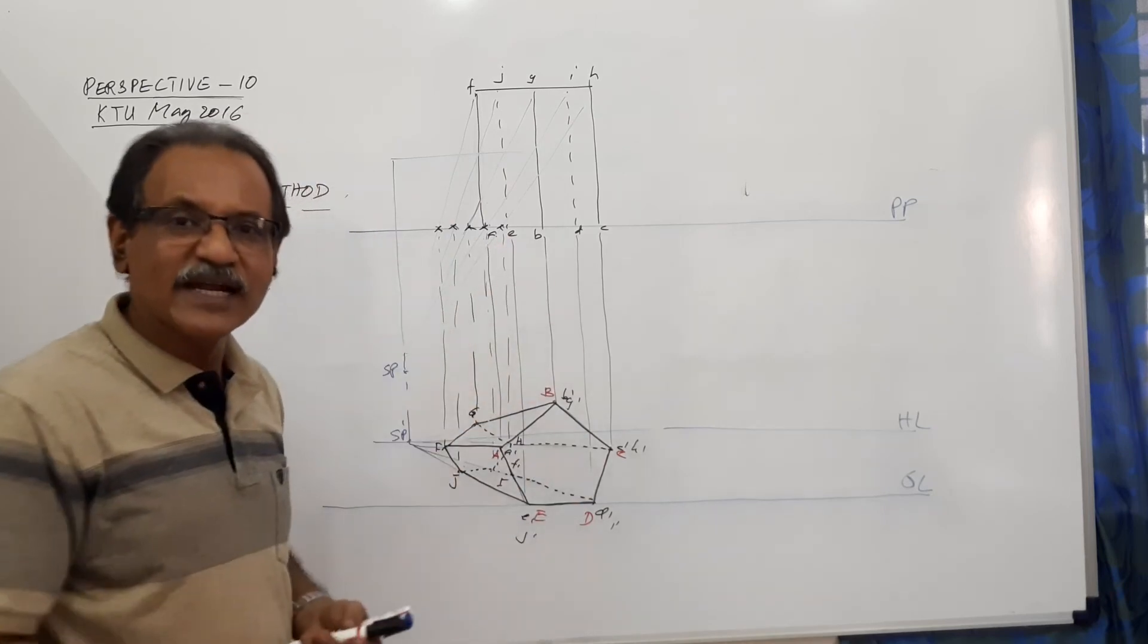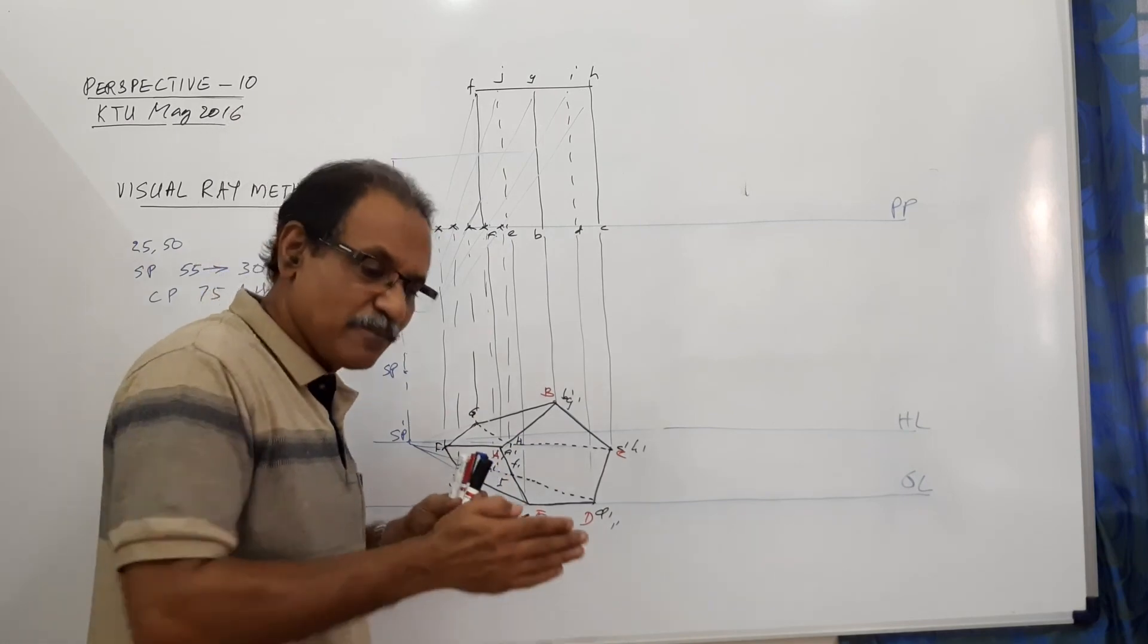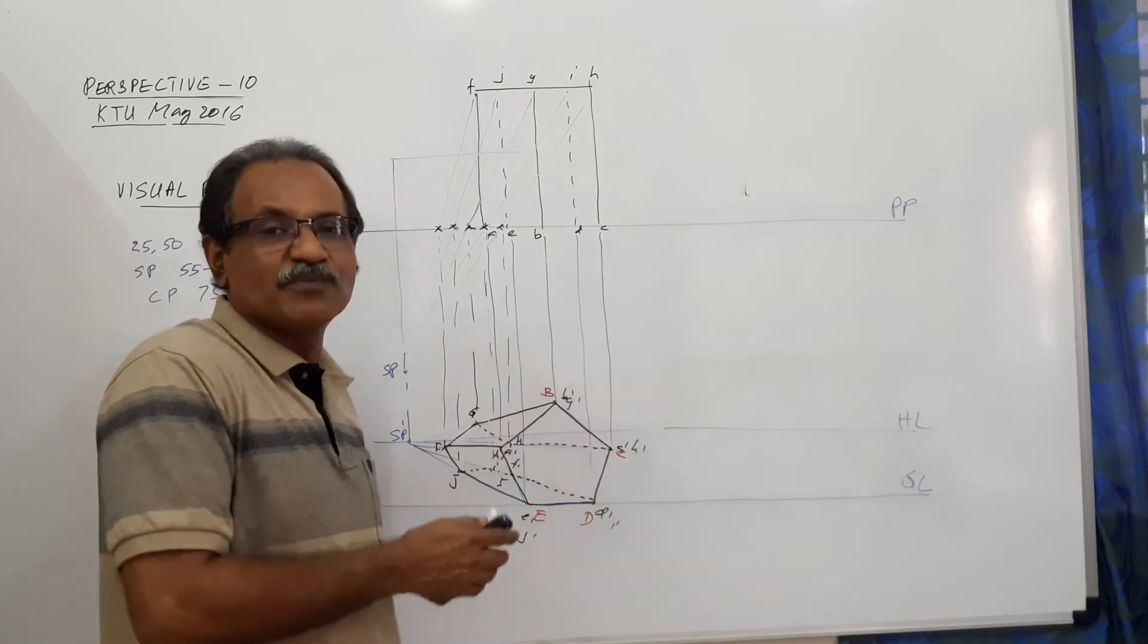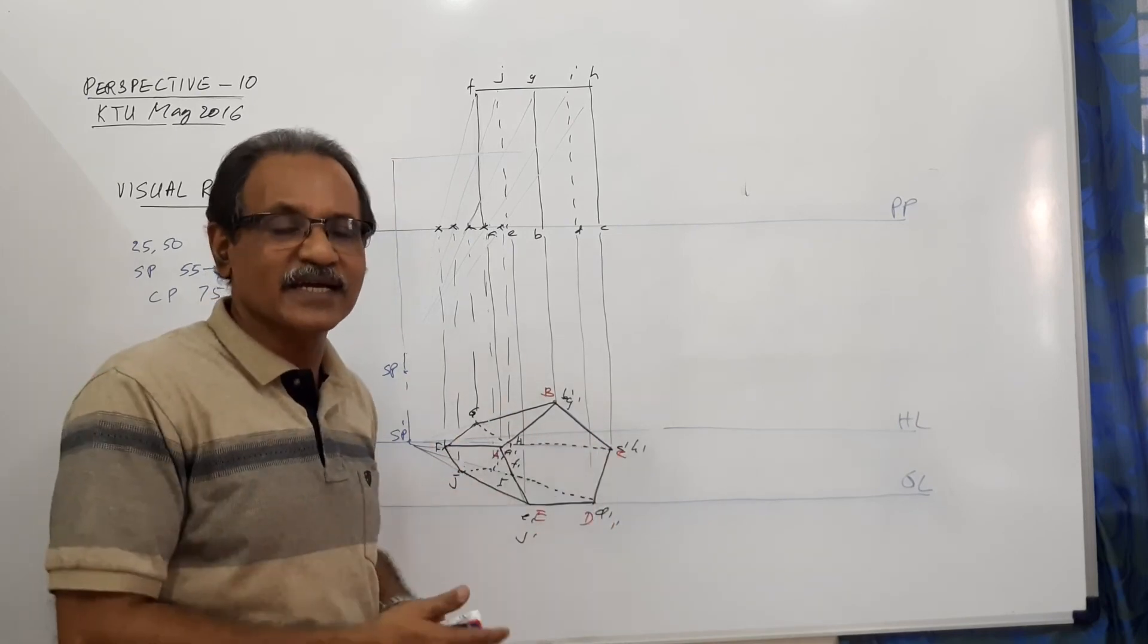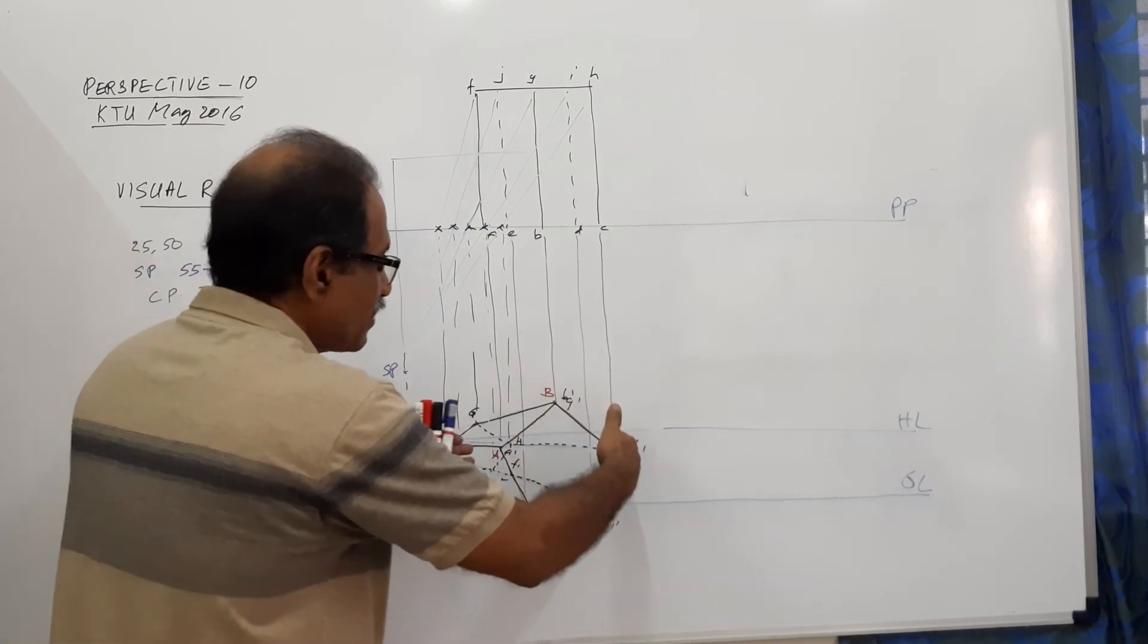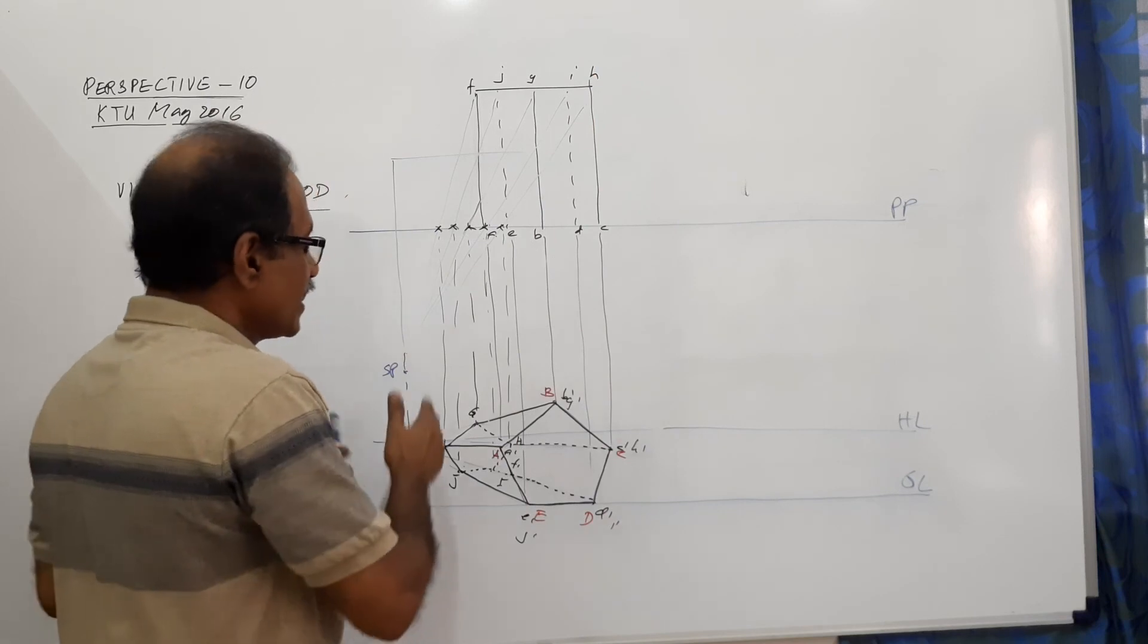Now, similar to this, you have hexagonal prism touching picture plane and again pulled back behind picture plane, square prism touching picture plane and pulled back behind picture plane, triangular prism, anything can come. This is the basic principle. You have to first of all draw the elevation, from the width draw the plan and proceed.